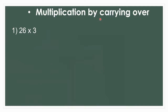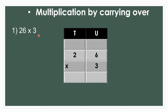Next is multiplication by carrying over. Our first sum is 26 multiplied by 3. Let's arrange it in the vertical form. We are going to multiply 6 in the units place by 3. 6 multiplied by 3 — 6 threes are 18. From this 18, we are going to carry over in the tens place. We take 10 units to make one 10, and write this 10 at the top in the tens place.